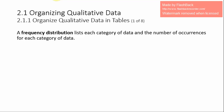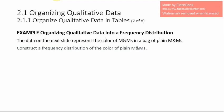When raw qualitative data are collected, we often first determine the number of individuals within each category. This leads us to the next definition, which is a frequency distribution. A frequency distribution lists each category of data and the number of occurrences for each category of data.